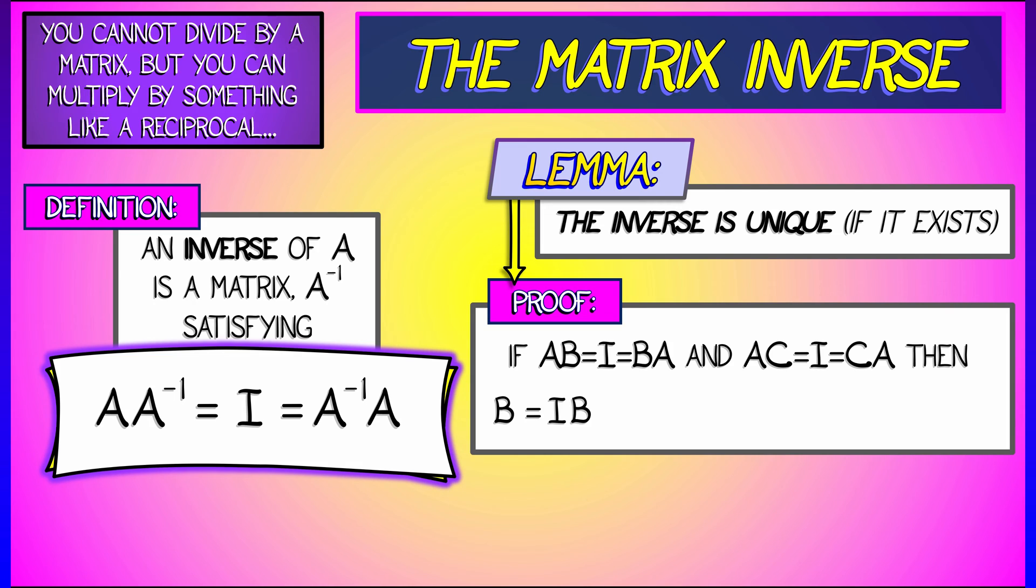You take B, of course, that's the identity matrix times B, because the identity matrix is kind of like one. But the identity we're going to rewrite as C times A, using the fact that C is an inverse to A. And now, because matrix multiplication is associative, you can rearrange parentheses.